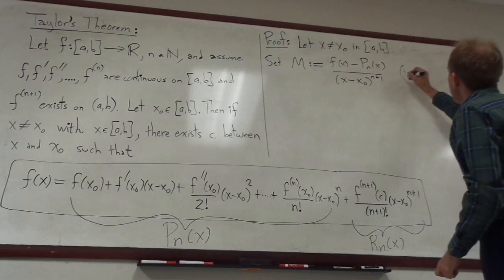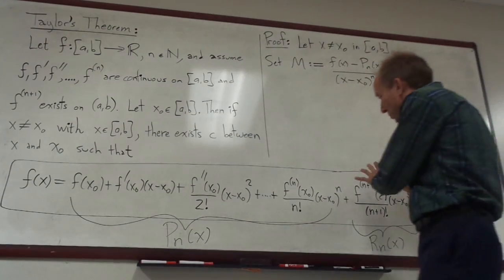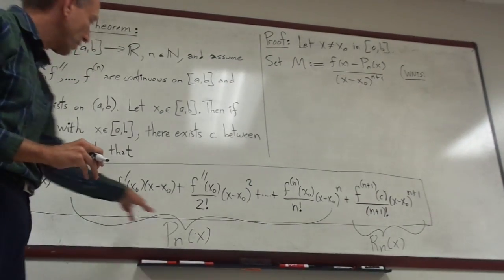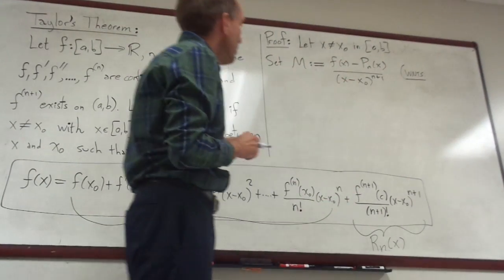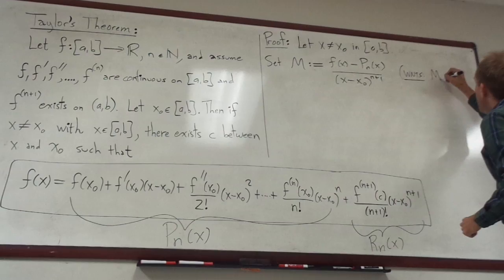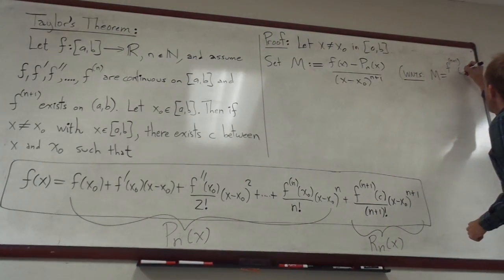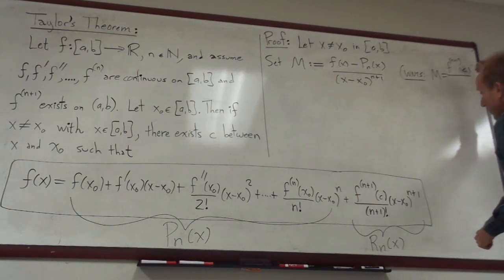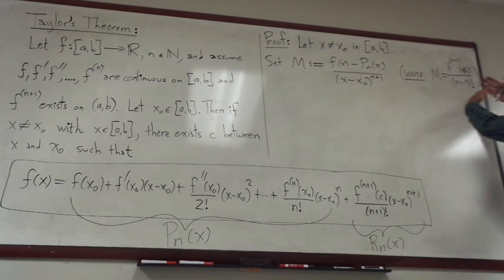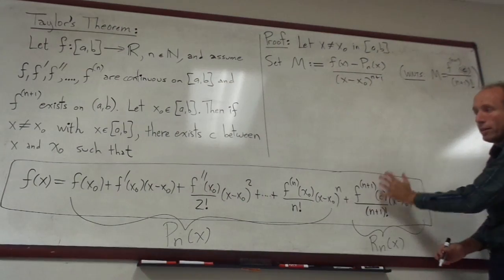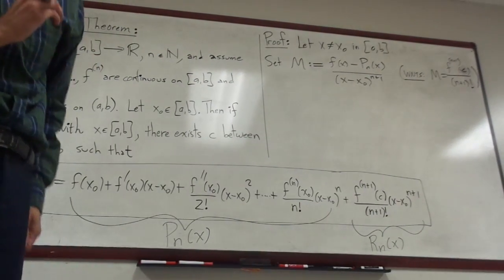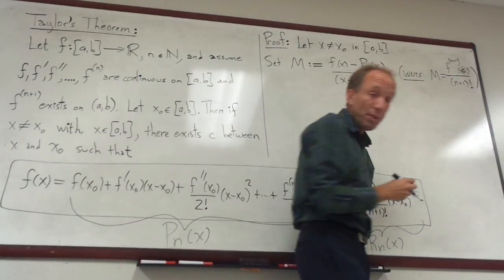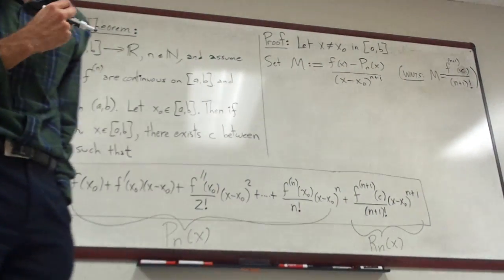What we really want to show is that f(x) minus p_n(x) equals this expression — that's actually up in the numerator. So what we really want to show is that m equals the (n+1)th derivative of f evaluated at c, divided by (n+1) factorial. If we can show that m equals that, it's equivalent to showing that this is the remainder term, and therefore the entire boxed formula is correct. Of course, we still have to find out what c is — that hasn't shown up yet in the proof.